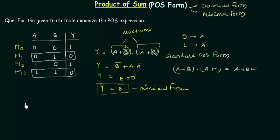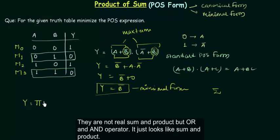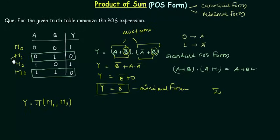So let's see how the question comes in exam. The function y is there. They will use pi instead of summation for the product. And in bracket we have M1, M3. We are using M1 and M3 because for M1 you can see the output is 0 and for M3 the output is 0. You can also represent it as y equals to pi M in bracket 1, 3.